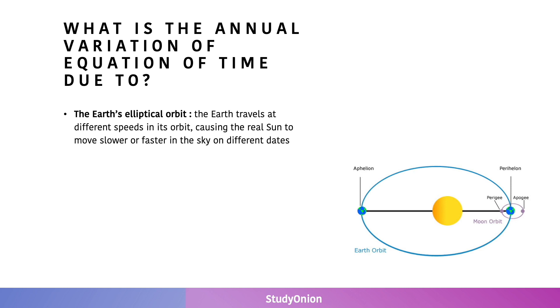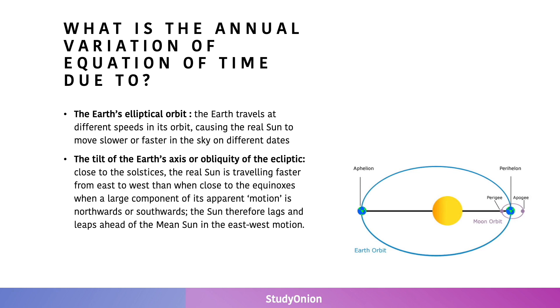There's also a second reason, and this is the obliquity of the ecliptic, or the tilt of the Earth's axis. Close to the solstices, June 21st which would be the summer solstice, and December 21st roughly the winter solstice, the spherical sun is traveling faster from east to west than when close to the equinoxes, when a large component of its apparent motion is northwards or southwards. The sun therefore lags behind or leaps ahead of the mean sun in east-west motion.